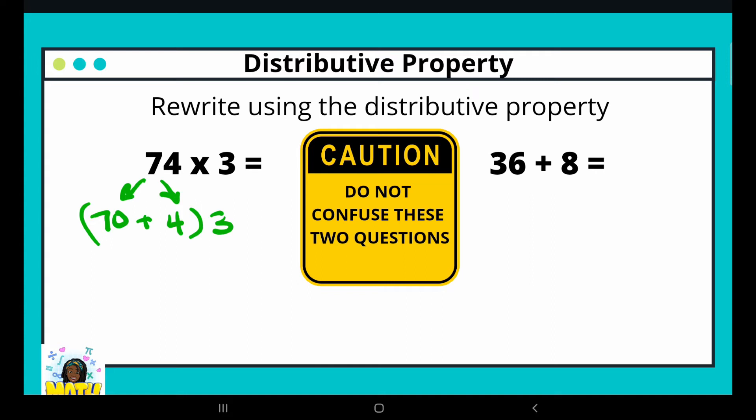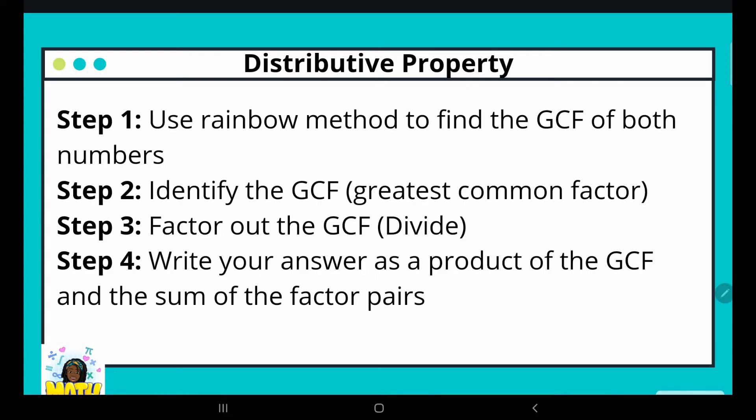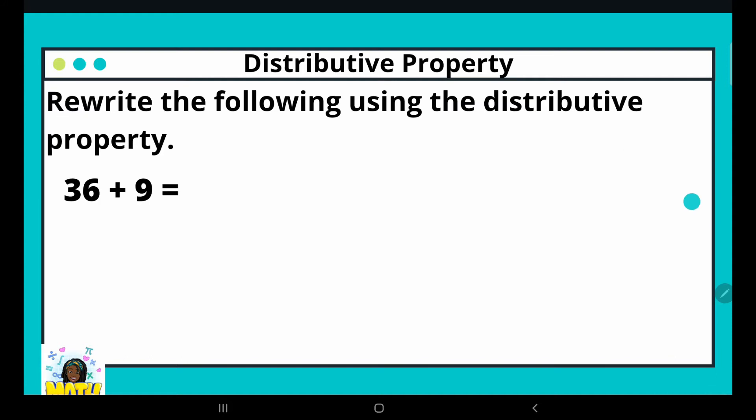Here are the steps. Use the rainbow method to find the GCF of both numbers. Once you've done that, identify the GCF. Factor out the GCF, which is a method of division. Then write your answer as a product of the GCF and the sum of the factor pairs.